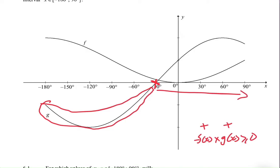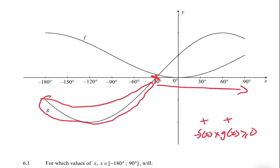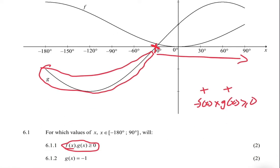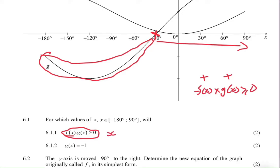And then f(x) is positive on the interval we are given, from -30° to where the graph ends. The product of f(x) and g(x) is greater than or equal to zero. So our answer here will be x ∈ [-30°, 90°].